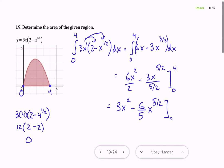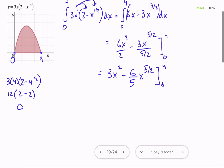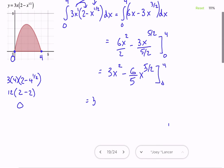And from 0 to 4. So we'll go ahead and plug in 4 first, so 3 times 4 squared minus 6/5 times 4 to the 5/2, and then minus, well, if we plug 0 in there, both of those terms have an x factor, so that's just going to go to 0.